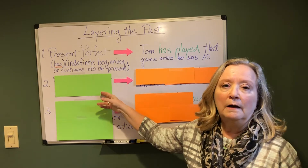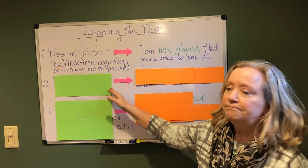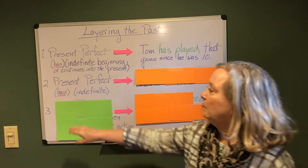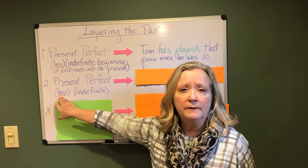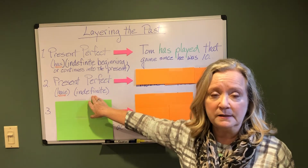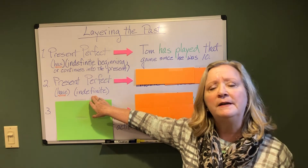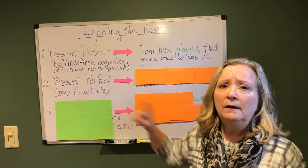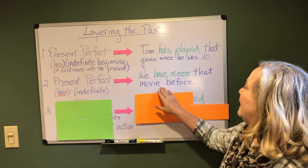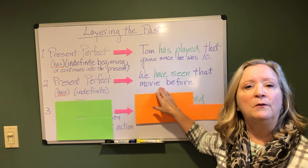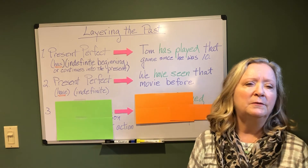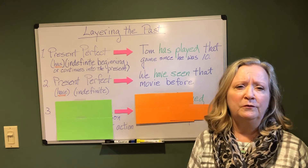The second use of the present perfect is with the helping verb 'have.' Again, it's used to express an activity that had some indefinite beginning time. For example: 'We have seen that movie before.' We don't really know when we saw it before — it doesn't really matter — but we've seen that movie before.